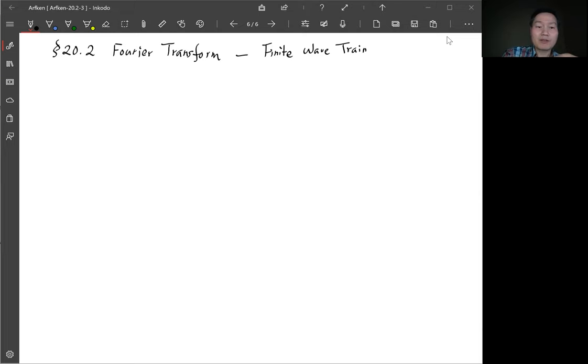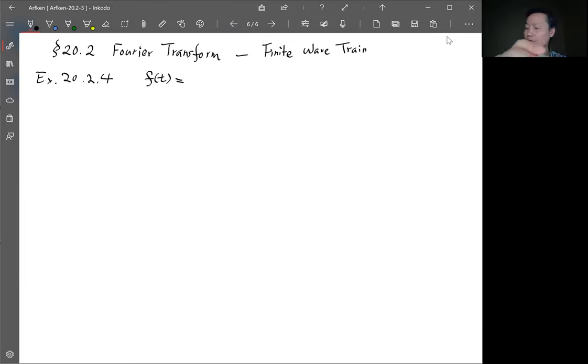So this is example 20.2.4. Now in this section the inverse transform we already talked about so we won't talk about that part. So this example f is given by a sine wave sine omega t within the finite t range.